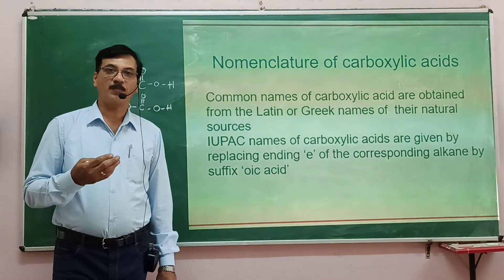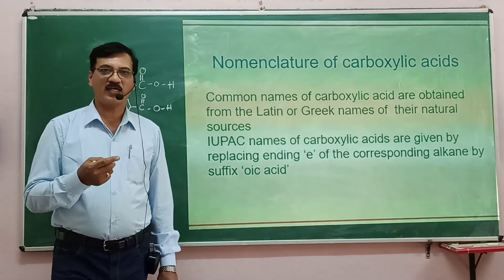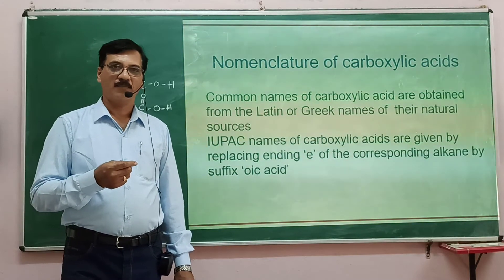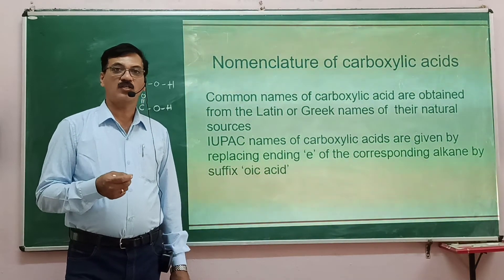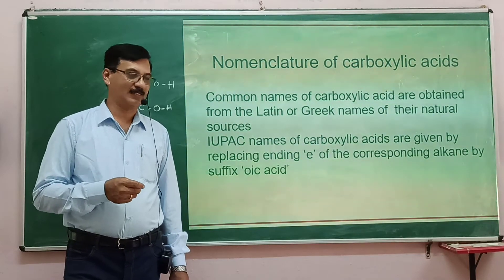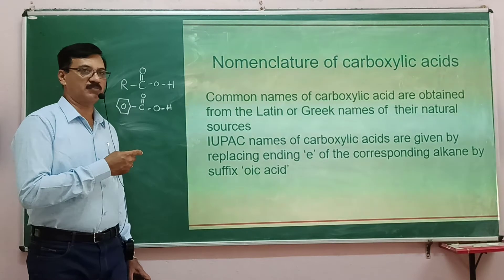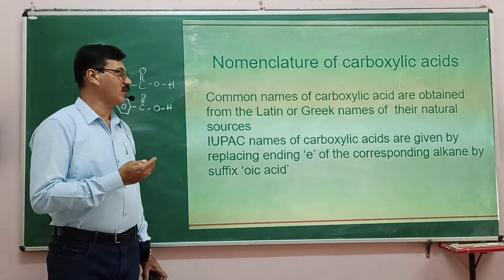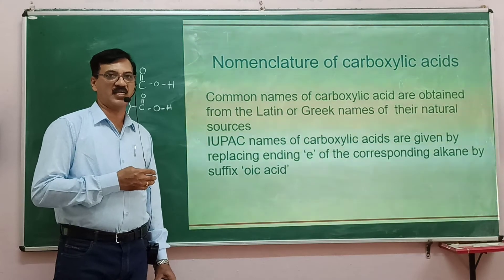For example, the trivial name for methanoic acid is formic acid. It is called formic acid because it originates from 'formica,' meaning red ant. In this way, common names are derived depending on the source of the compound or from Greek or Latin names.